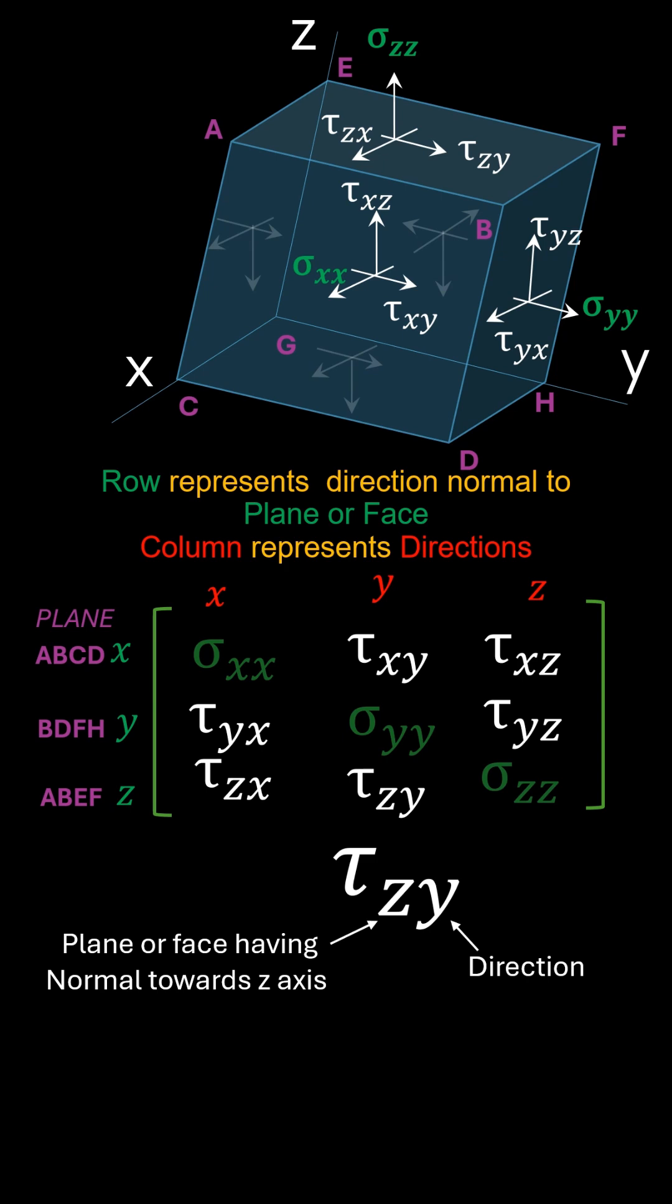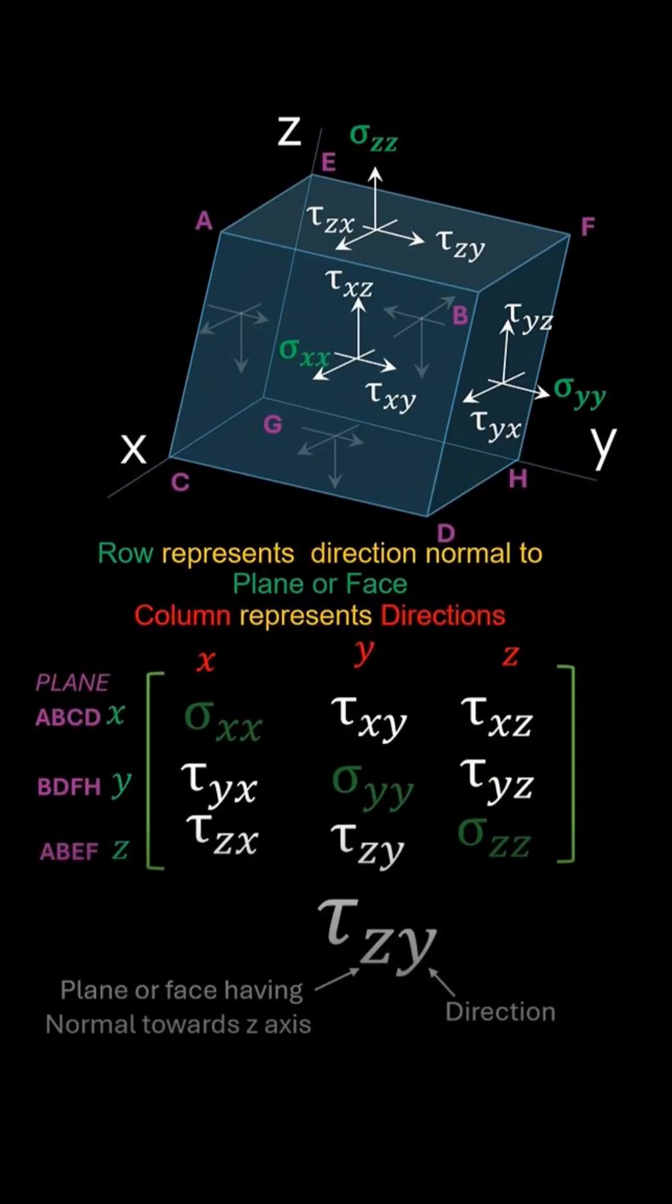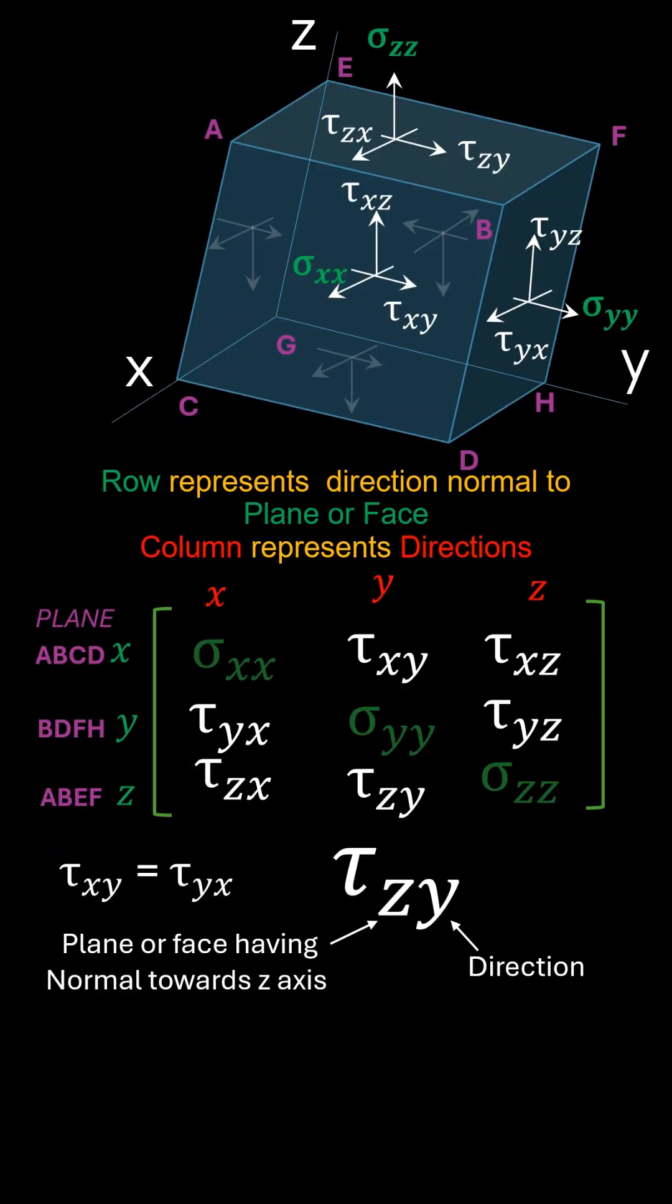The diagonal elements of the matrix represent normal stress components, whereas the off-diagonal elements represent shear stress components. From equilibrium considerations of the element, the stress tensor is symmetric, meaning τxy equals τyx and similar criteria follows for other shear components.